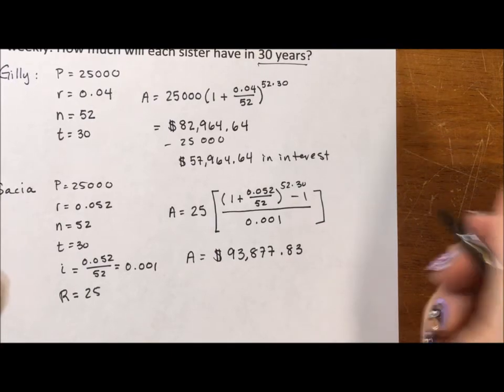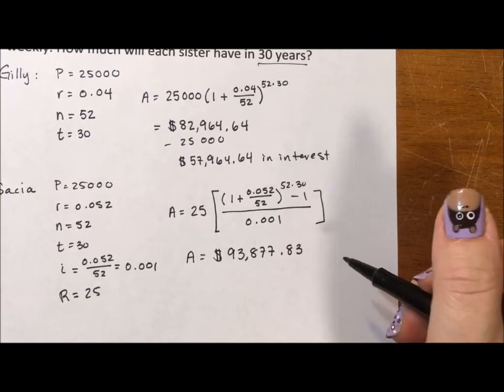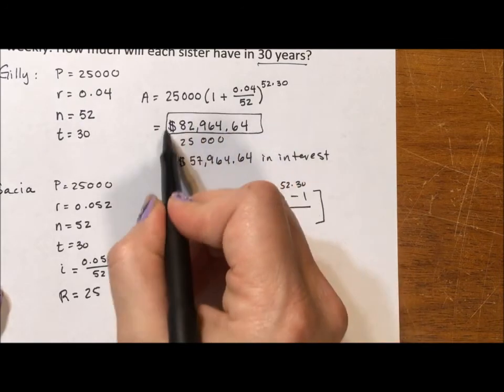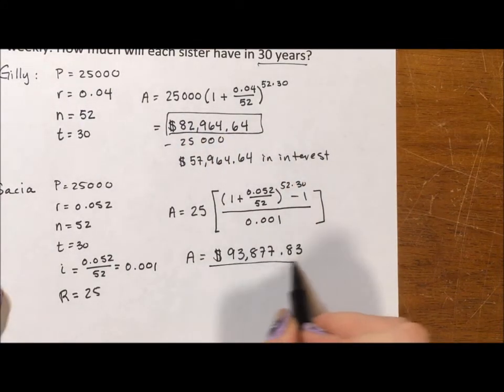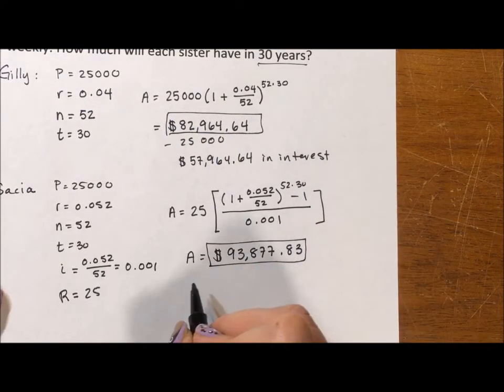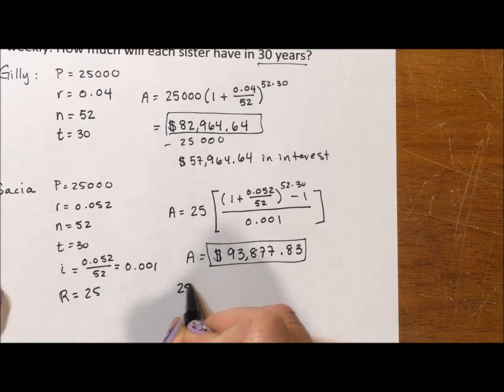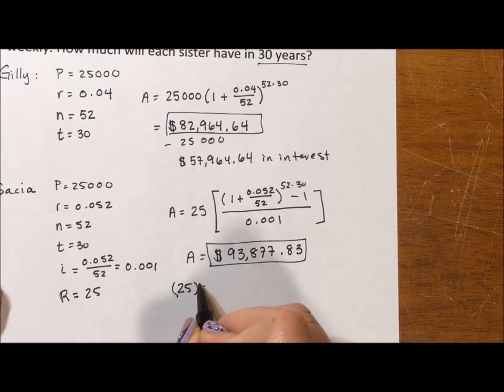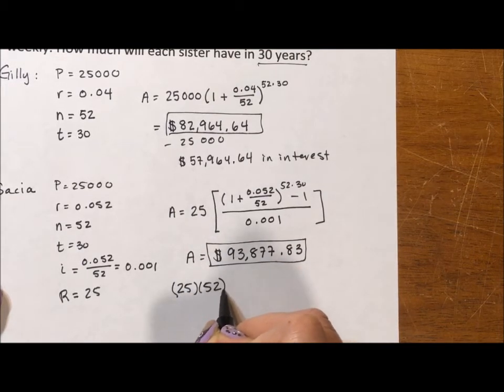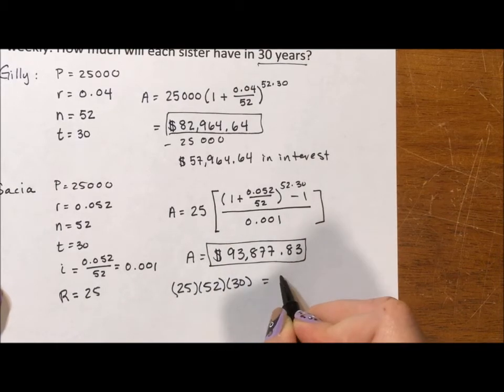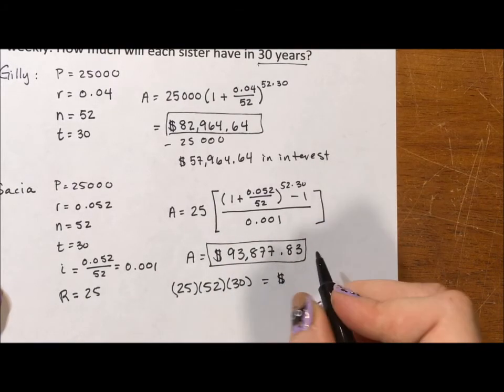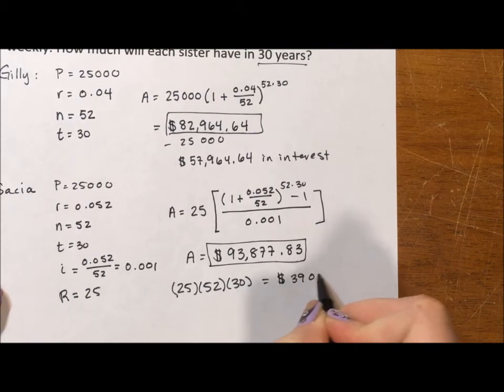But here's the shtick. It looks like she's made so much more. I mean, Gilly has this just under $83,000 and Saisha almost has $94,000, but Saisha put $25 into the account every week for 30 years, which means out of pocket, Saisha put in $39,000.